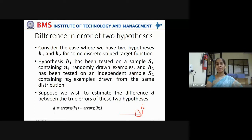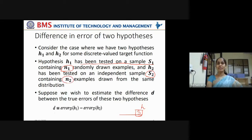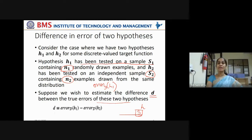Now consider the case where we have two hypotheses H1 and H2, which are tested on two samples S1 and S2. Hypothesis H1 has been tested on sample S1 containing N1 randomly drawn samples, and H2 is another hypothesis tested on an independent sample S2 containing N2 examples drawn from the same distribution. In this case, suppose we wish to estimate the difference D between the true errors of these two hypotheses — the true error associated with H1 is error_D(H1), and the true error associated with H2 is error_D(H2).